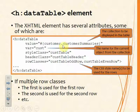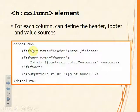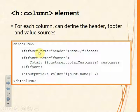We've bound the data table to a collection, and within this table the individual object for a particular row will be referred to as 'cust' in this example. When we nest column elements within the data table element, we can bind the content of that column to a property in the object. We can also specify header and footer by making use of facet elements. A facet named 'header' will set up data displayed in the header row for that column.